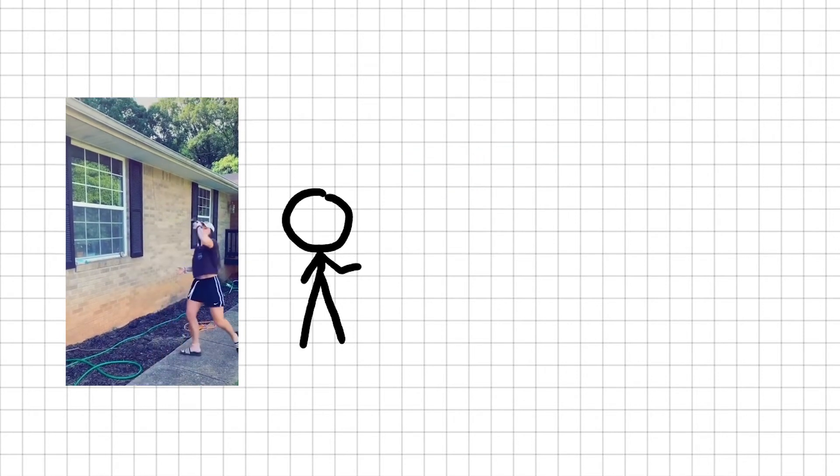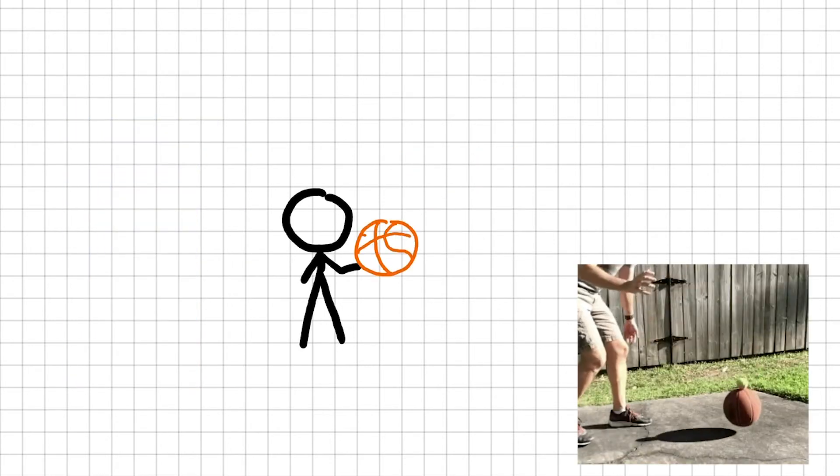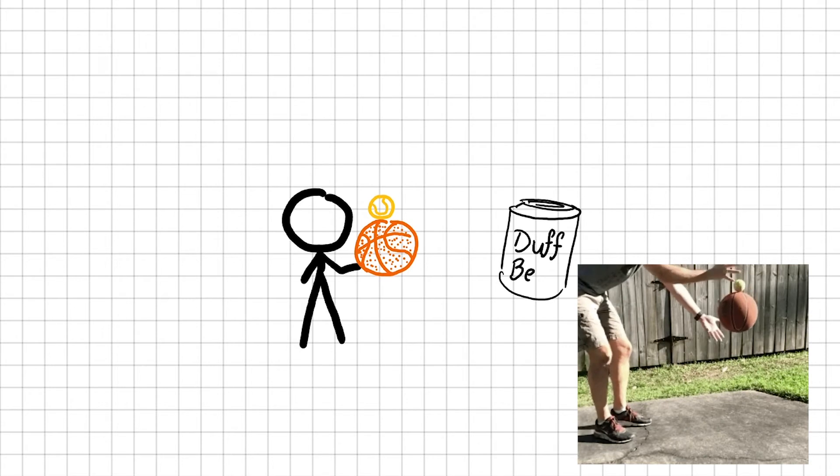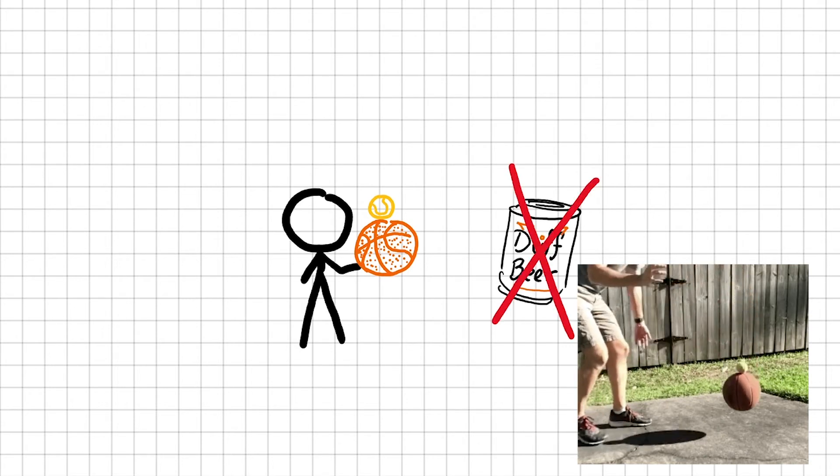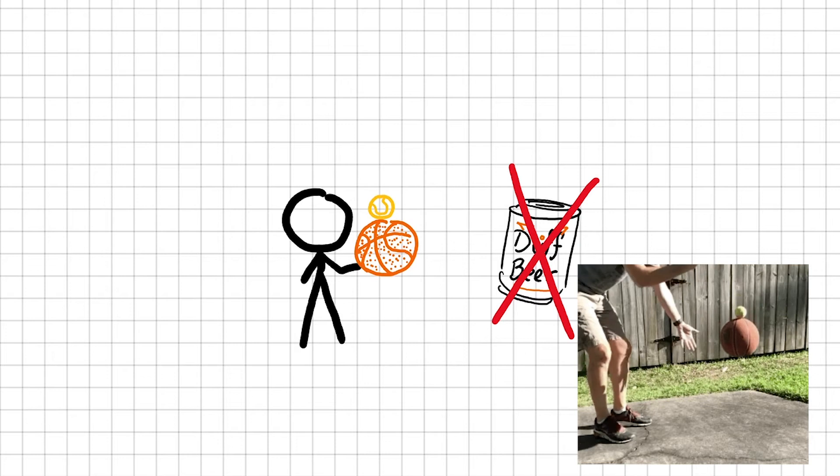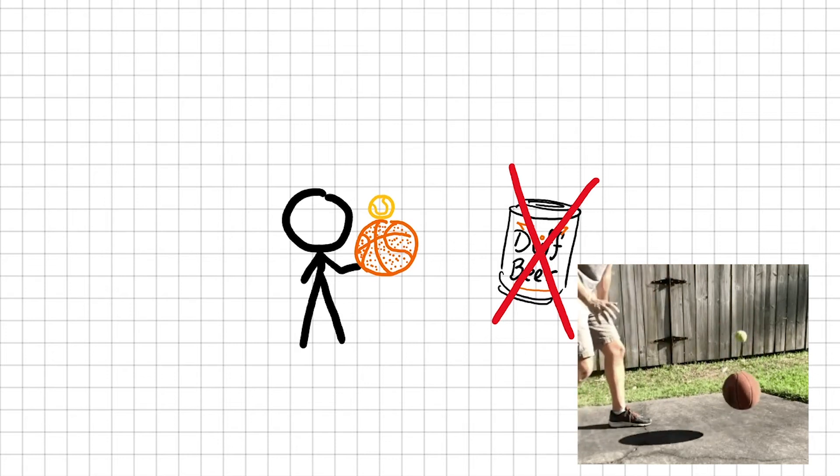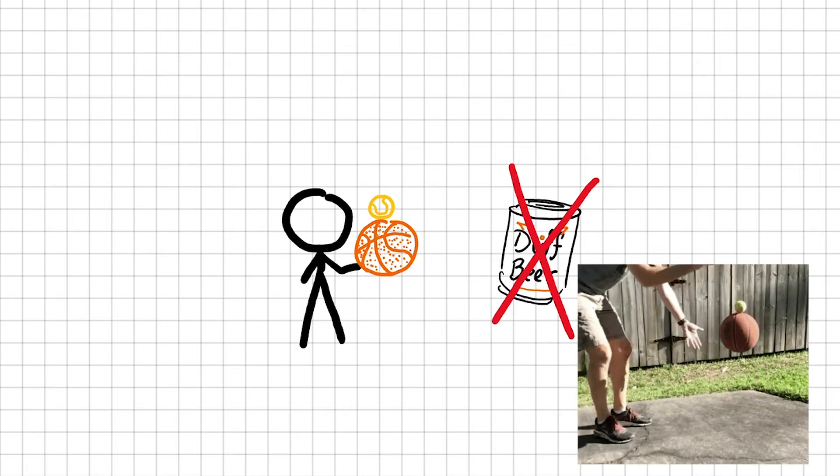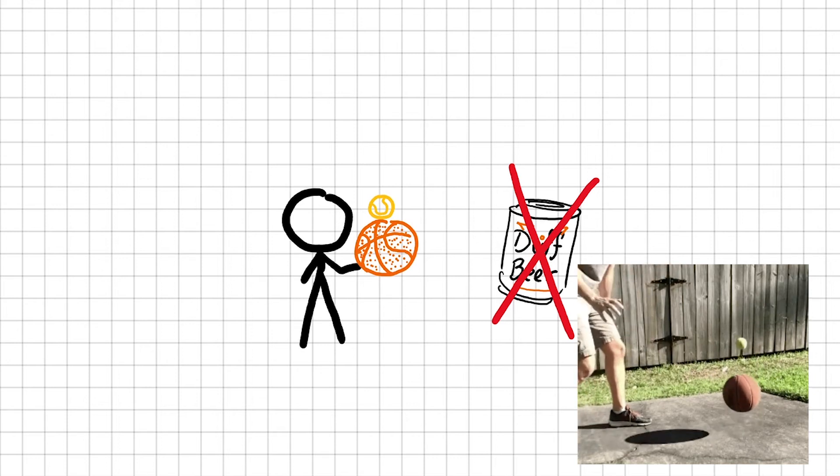This was traditionally demonstrated using a basketball and a tennis ball instead of a can of beer. When you let go of the basketball and the tennis ball at the same time, the tennis ball flies off with a pretty serious velocity. It bounces so much higher compared to the basketball. So what's going on here?